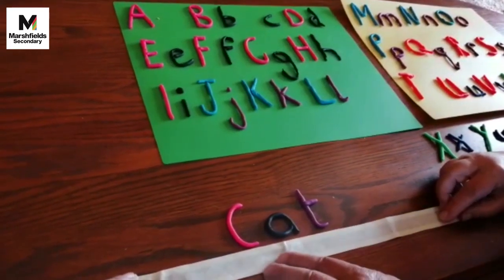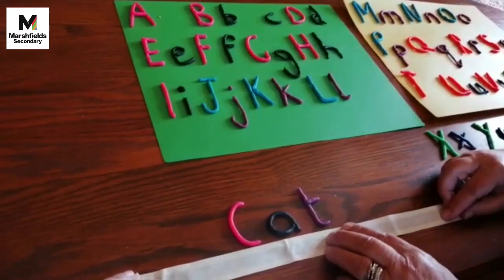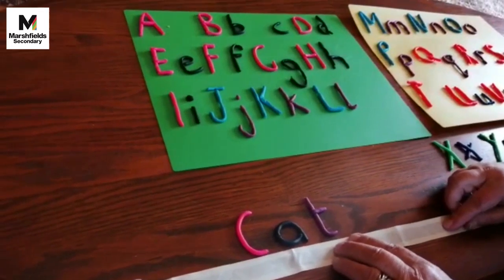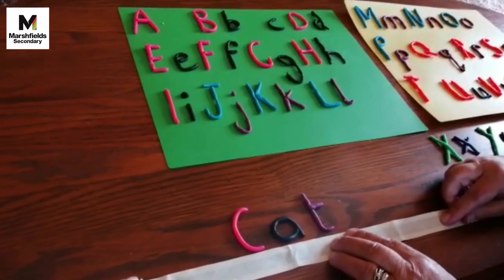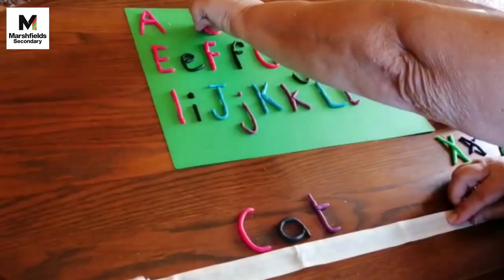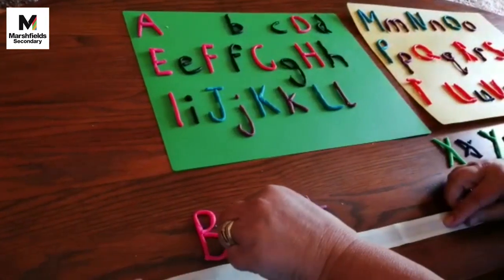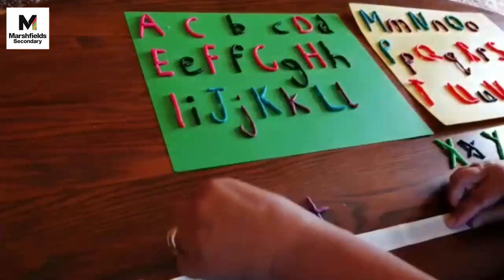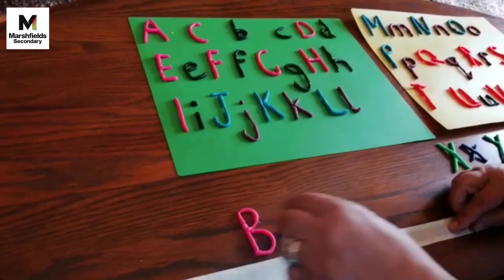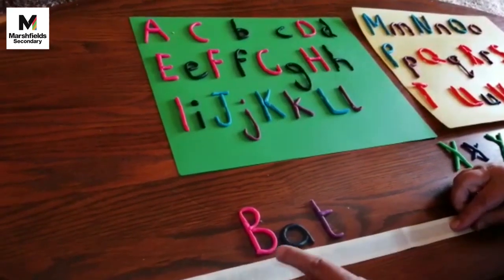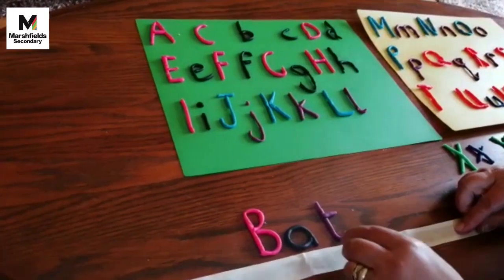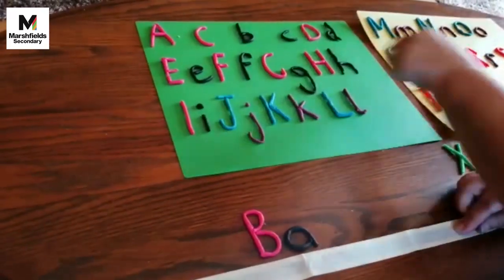So there we have our cat, and can you see how it sits on the line? If I change my letter, I can have 'bat,' and you can always sound it out if you're not sure of the letters.